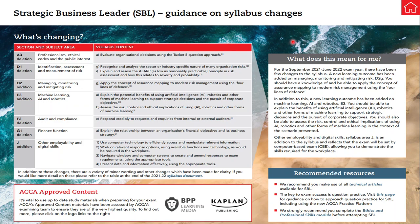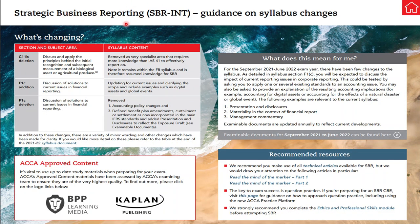Now let us see what changes have been introduced in the Strategic Business Reporting exam. There are mainly three subject areas where changes are being introduced: first, discuss and apply the principles behind initial recognition and subsequent measurement of biological assets or agricultural produce; second, discussion of solutions to current issues in financial reporting; and third, accounting policy changes and benefit of planned amendments. Relevant examples include presentation and disclosure, materiality in the context of financial reporting, and management commentary.